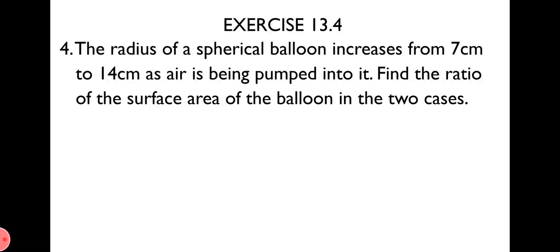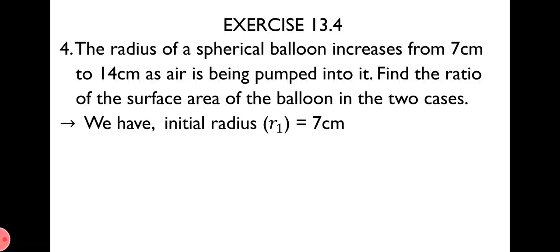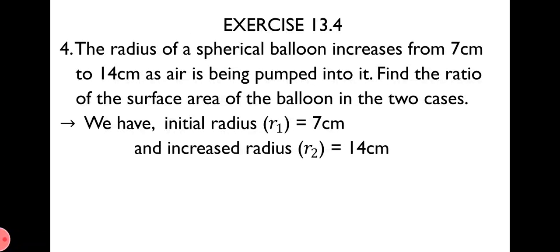Naturally, the radius of the balloon will increase. Hence, we get two types of radius: the initial radius, which is given as 7 cm, and the increased radius, which is given as 14 cm. Using these two different radii, we have to find two different surface areas and then find the ratio of both. So, for solution, we have initial radius r1 = 7 cm and increased radius r2 = 14 cm.